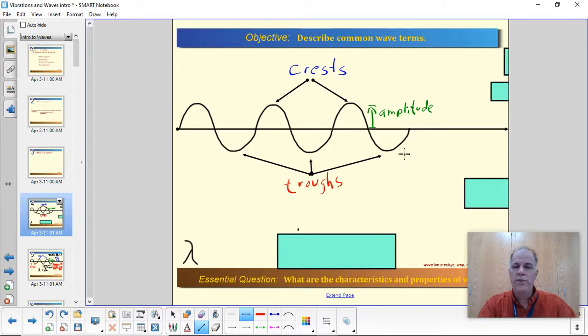So these lowest points are called the troughs, while the peaks, the high points are called the crests. Now, the crests and the troughs are the most extreme motion of the medium. And the amplitude is from the neutral position to one of those extremes. So the amplitude could also be the distance from a trough to the neutral position. That would also be the amplitude.